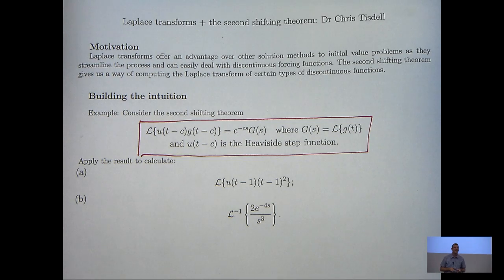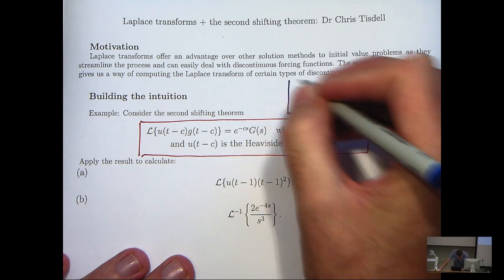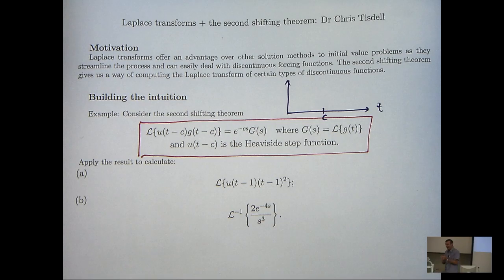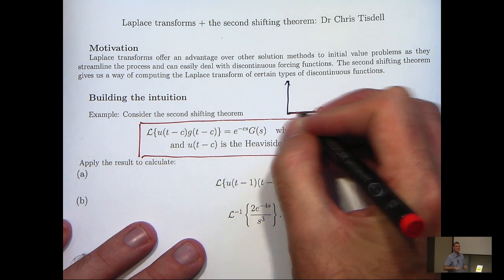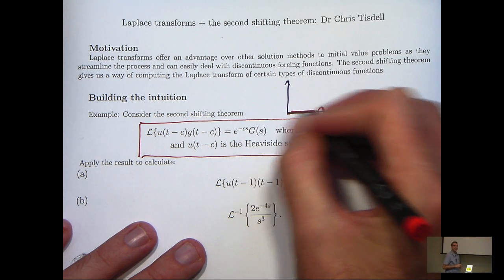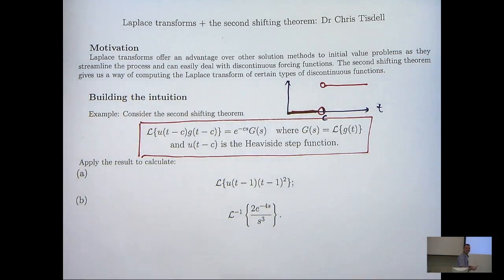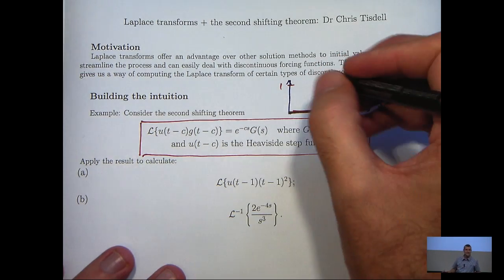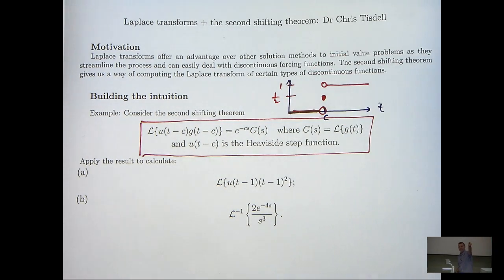Now just to remind you what the heavyside step function is, so imagine c is a point on the t axis. To the left of the point c, the heavyside step function is 0. To the right of the point c, the heavyside step function is 1. And at the point c, the heavyside step function is just 1 half.